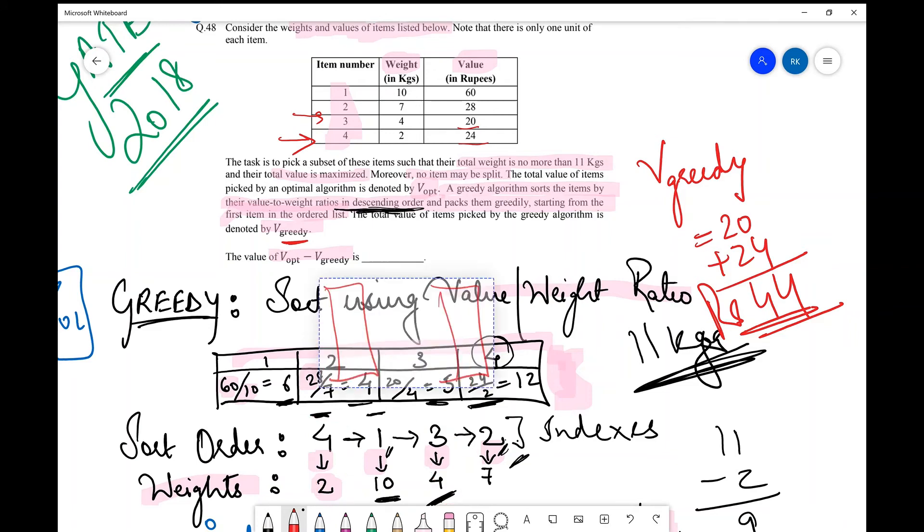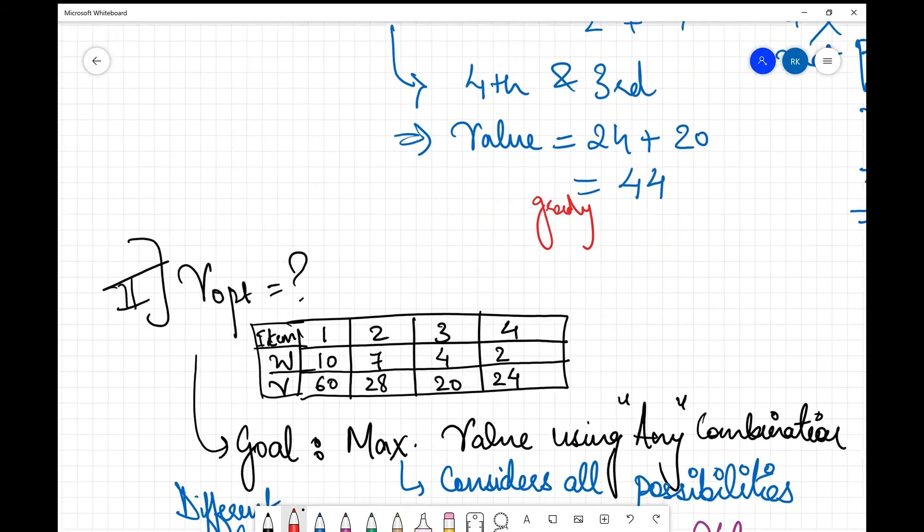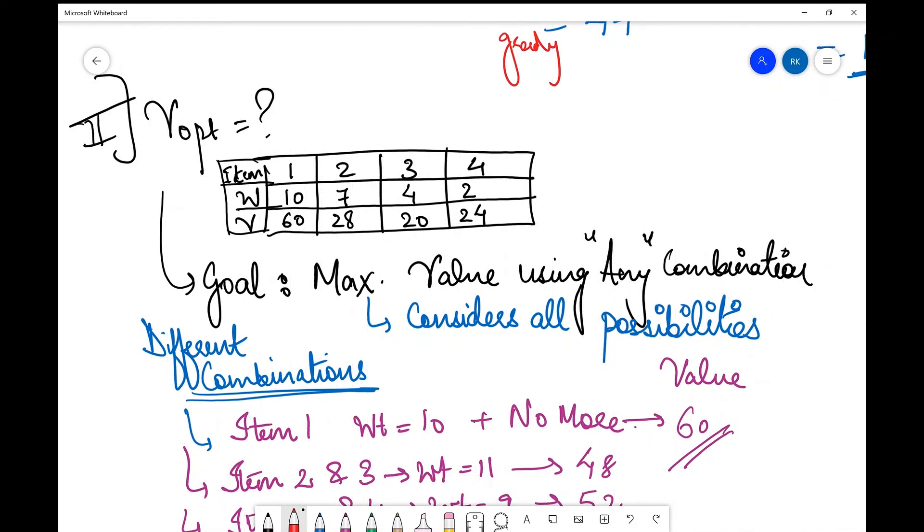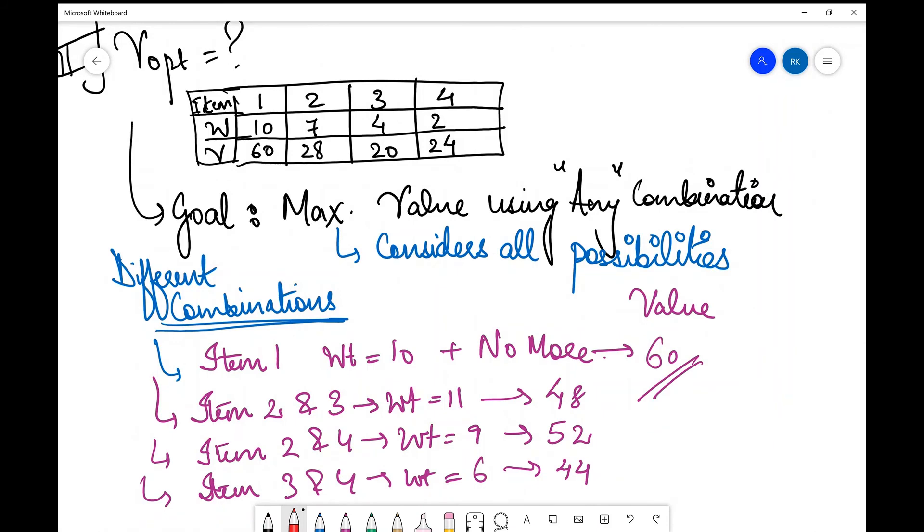So that is the value for V_greedy. Now we need to check for V_opt. So now we check for V_opt. Now as I said V_opt considers all the other possible combinations to maximize the profit. So I start by checking the various combinations.